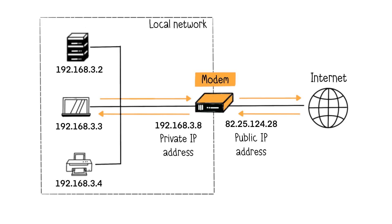But how does it work in practice? At home, in your private network, your personal devices each have a private IP address that isn't disclosed when you connect to the Internet. On the other hand, your modem has a private IP address on your local network side and a public IP address on the Internet side. In other words, it's this public IP address that allows your modem, and thus your various connected devices, to access the Internet. Your modem, acting as a router, handles the proper transmission of data from one network to another — your private network to the Internet, and vice versa. However, from the Internet, only one IP address for your devices will be visible.